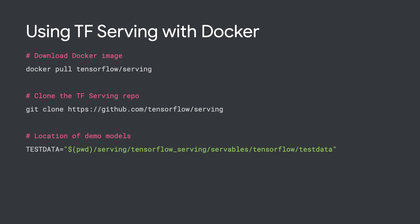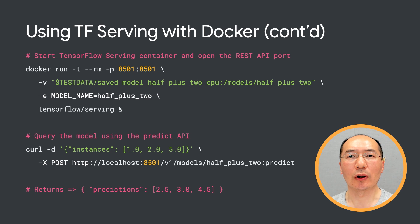Next, download the TF Serving image using docker pull. We also clone the TF Serving repository so that we can use a sample saved model for demonstration. Now we can start the TF Serving server by running docker run. We are using a simple model, half plus two, which halves the input and then adds two. Once the model server is started, we can query the model by sending a POST request to TF Serving. We feed inputs of 1, 2, and 5 to the model, and we get 2.5, 3, and 4.5 as a return. We have successfully deployed and run our first model using TensorFlow Serving.